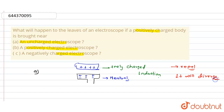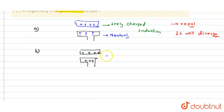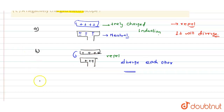Now for Part B — a positively charged electroscope. This electroscope is already positively charged, and a positively charged body is brought near it. There will be positive charge and positive charge, so there will be repulsion. The leaves will repel each other and further diverge, because the amount of charge on the electroscope increases.